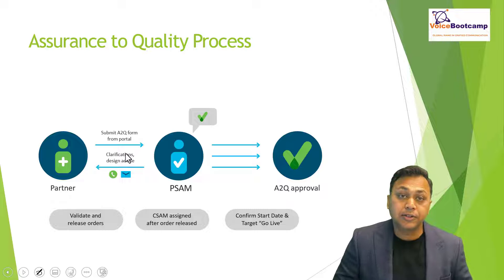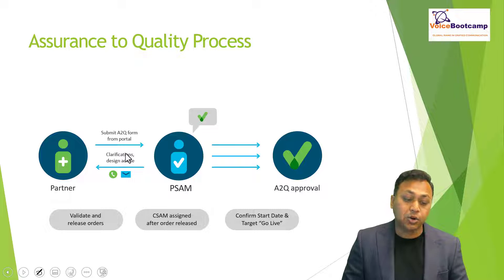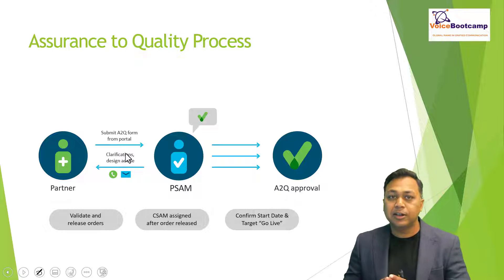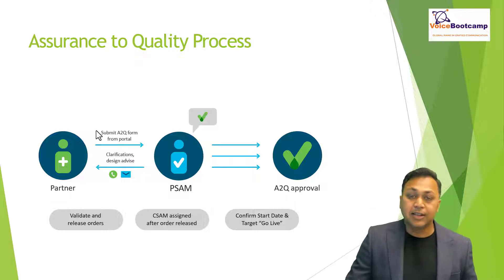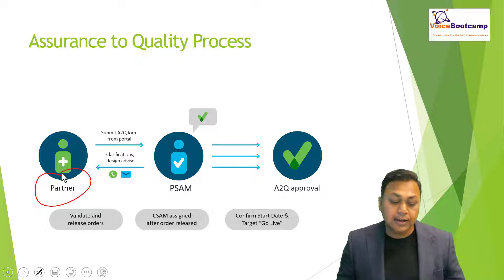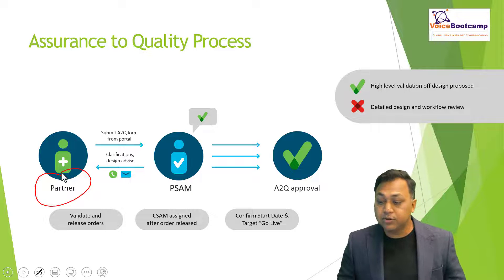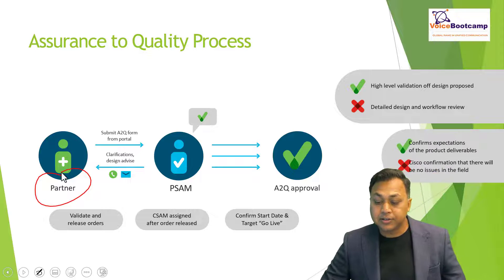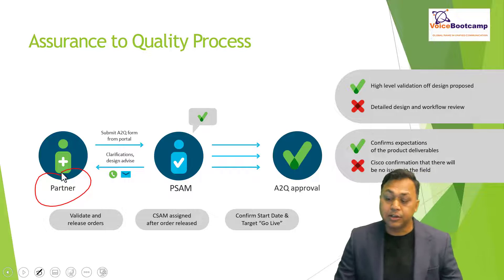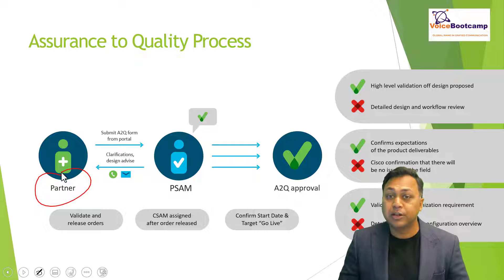Cisco has something called an Assurance to Quality process, which means every customer must go through a certain process before they can get approval to deploy. This is called the CTA quality assurance process. You work with your account manager, sales manager, and partner to get approval, clarify design requirements, and validate your high-level design to make sure everything is good.